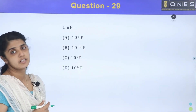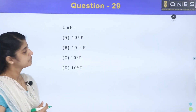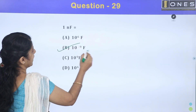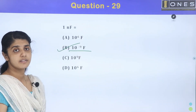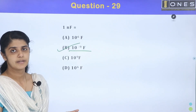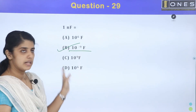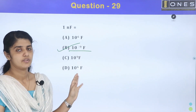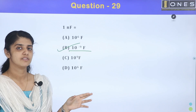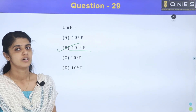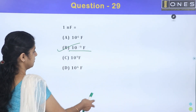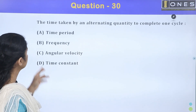Next question: 1 nF is equal to 10 raised to minus 9. Also, 10 raised to minus 6 is micro, and 10 raised to minus 3 is milli.